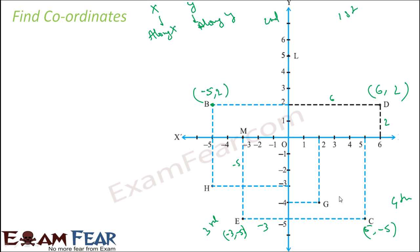For the next point, x is along the x-axis at a distance of 2, and y along the y-axis is minus 4, giving the coordinates 2 comma minus 4.